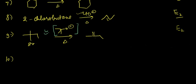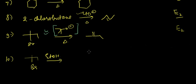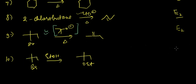In another example with EtOH, this is solvolysis and we get the substitution product with an OEt group. This is clearly SN1 because for SN2 we would need a strong nucleophile.